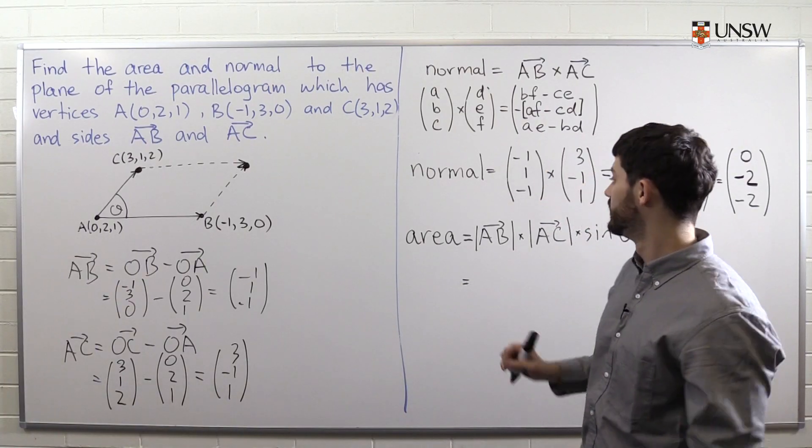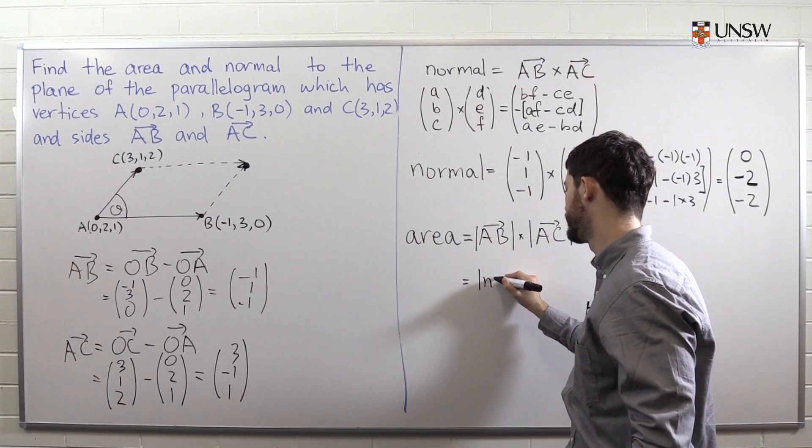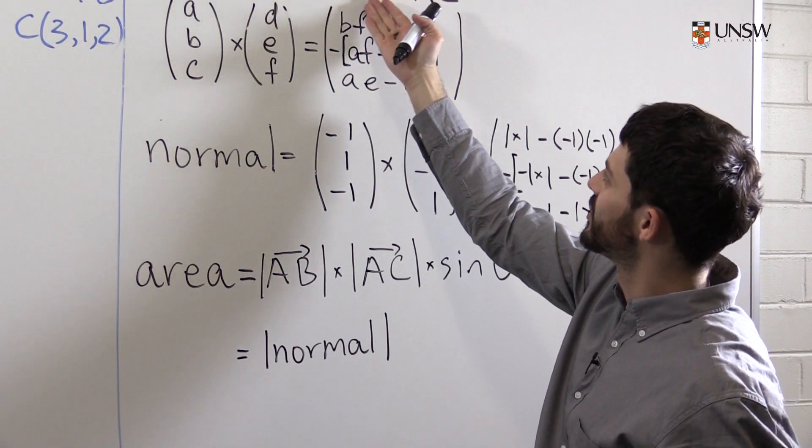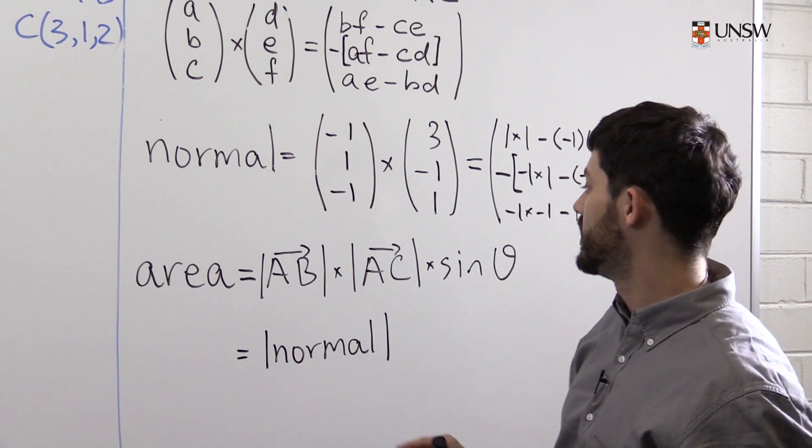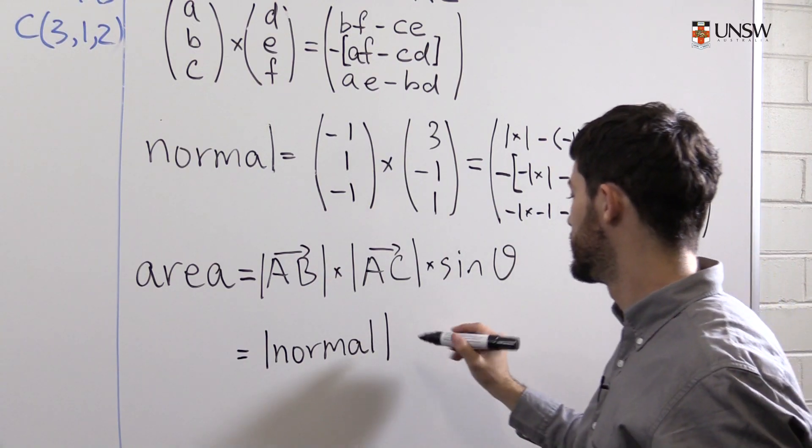But luckily, this is precisely equal to the length of the normal that we just found. This is a property of the cross product. If we take the cross product of two vectors, the length of the result is given precisely by this formula. So all we need to do is find this length.